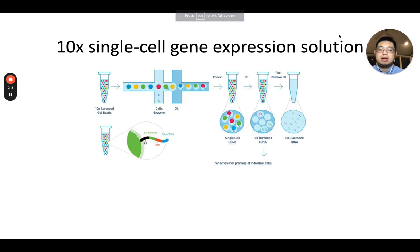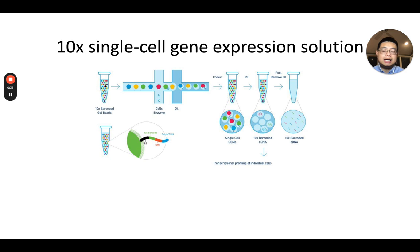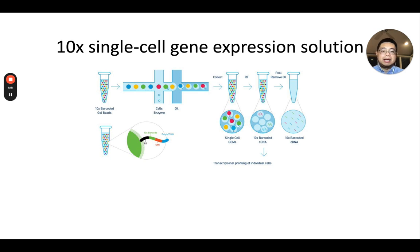There are many commercially available platforms to generate single-cell data, and one of the most popular is 10x Genomics, the droplet-based method. You can buy barcoded gel beads where each gel bead contains a unique DNA barcode. You prepare a single-cell or single-nucleus suspension and run it through the 10x machine at the right speed so each cell is associated with a unique gel bead within a single oil droplet. Reverse transcription occurs within that droplet, so all mRNAs are tagged with the same barcode. After sequencing, we can computationally group all transcripts from the same cell together based on that barcode.